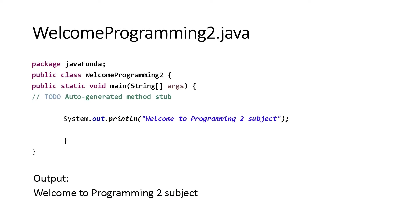We have our first program in Java, and the class name is WelcomeProgrammingTo, and the file name is also WelcomeProgrammingTo.java. Whatever the class name is, that will also be the file name of the program. The .java extension is the extension of a Java file, and once you compile it, it will produce the class file.